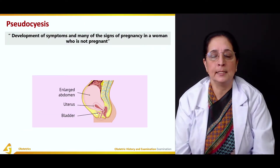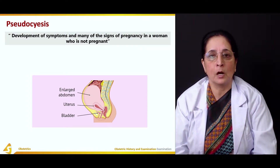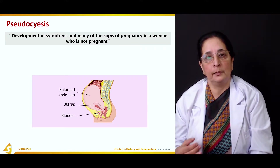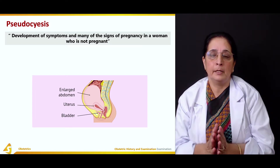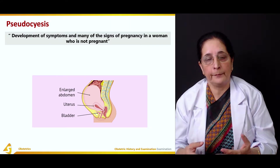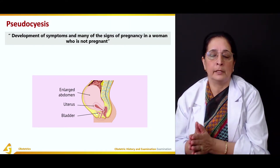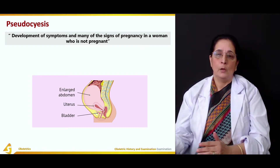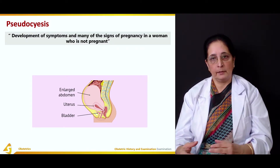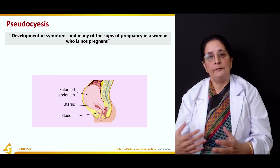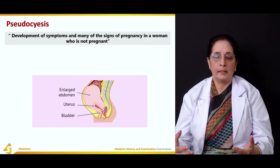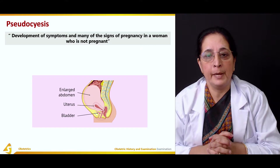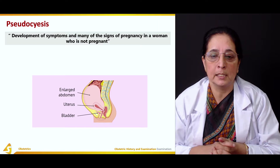Pseudocyesis is a condition in which a female is not pregnant but has symptoms and signs of pregnancy, and she feels that she is pregnant. It is very common in females who desperately want to become pregnant or who have a fear of pregnancy. Women with conception problems who have been trying to conceive for a while may feel pregnant when they miss a few days of their cycle, but the pregnancy test is negative.